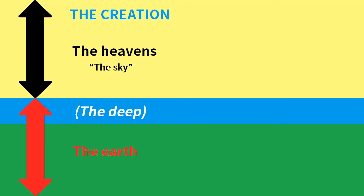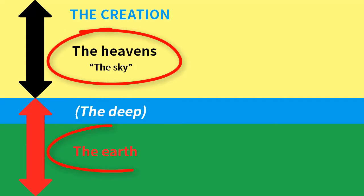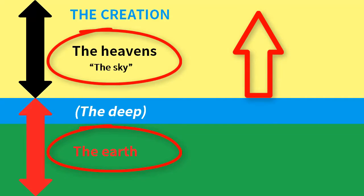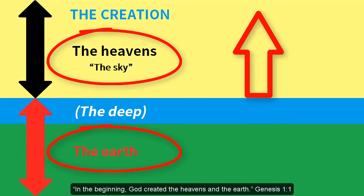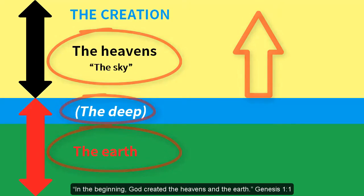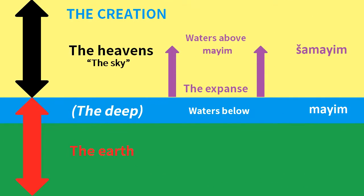Rather, the cosmology of Genesis 1 views the creation as having two parts: the sky and the earth. The sky starts at the surface of the earth and extends upwards. In the beginning, God created the heavens and the earth. At its origin, the earth was covered with deep water. Because ancient polytheists prayed to their gods for rain, Genesis explains how it was the God of the Bible who created the sky from which rain falls.